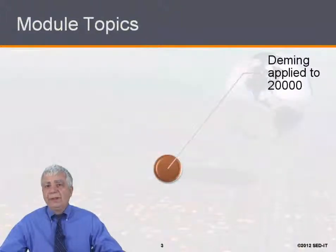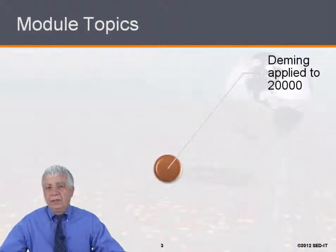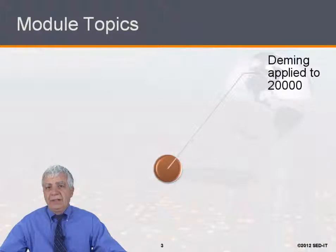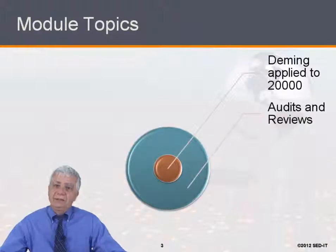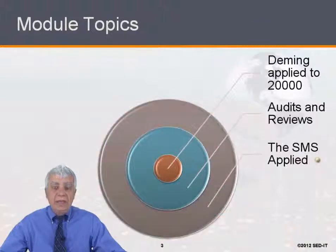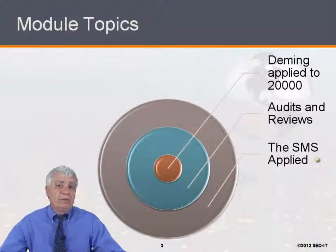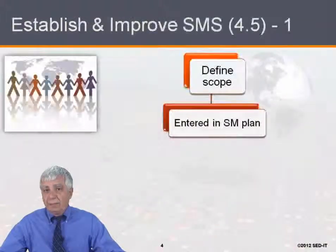The topics for this module would be using Deming applied to ISO 20000. We'll be talking about audits and reviews, and we'll be looking at the service management system as it's applied.